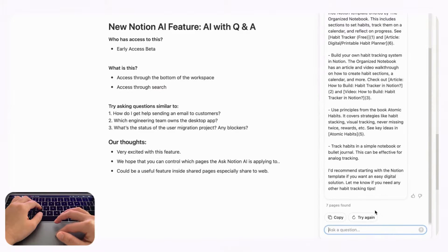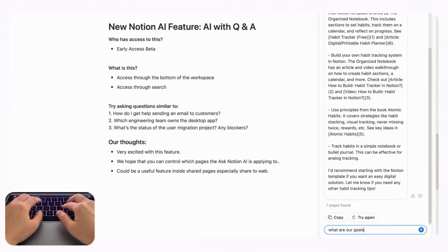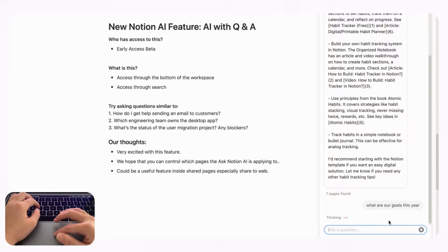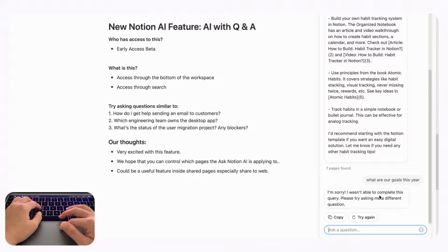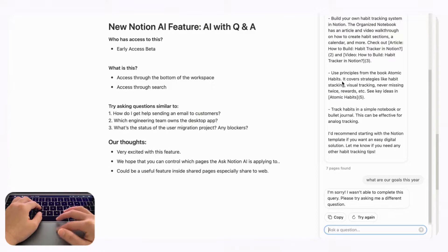Here are some of our thoughts about this feature. In general we're very excited, but it does have its limitations. If we ask something more complicated like 'What are our goals this year?', there are so many pages to sift through that it can be difficult to find the correct answer. It returned: 'I'm sorry, I wasn't able to complete this query, please try asking me a different question.' We think one of the biggest improvements needed is the ability to limit which pages Q&A applies to, so you're not searching your entire workspace.